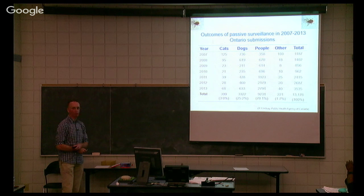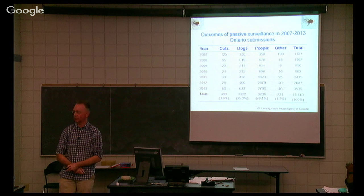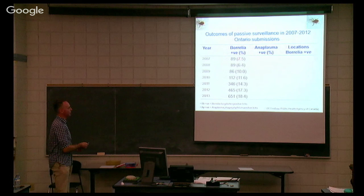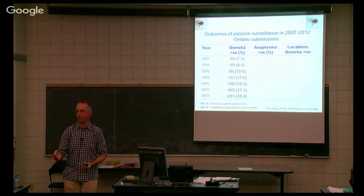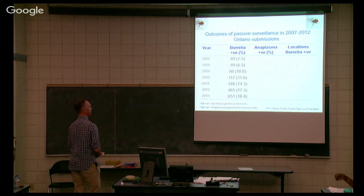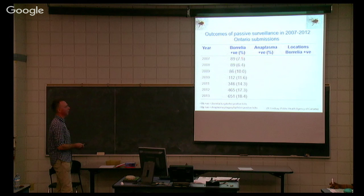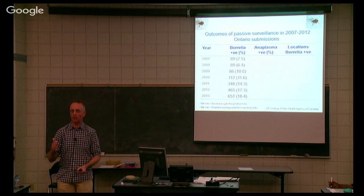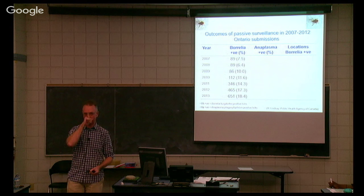This is the number of ticks received in Ontario from cats, dogs, people, and other species. On average, just over two-thirds of the ticks are off people, and about a quarter are off dogs. Of the ticks testing positive for Borrelia burgdorferi by PCR: back in 2007, 7.5% were positive. That figure has been progressively increasing to 18.4% in 2013. So in 2013, on average approximately one in five ticks were infected — and the evidence is it's likely to go further.